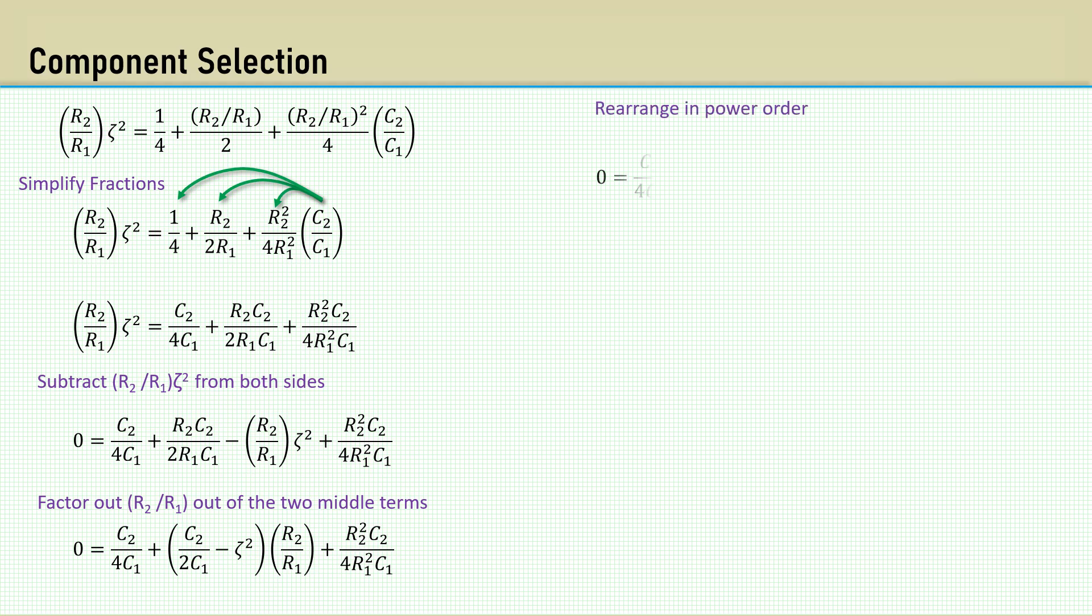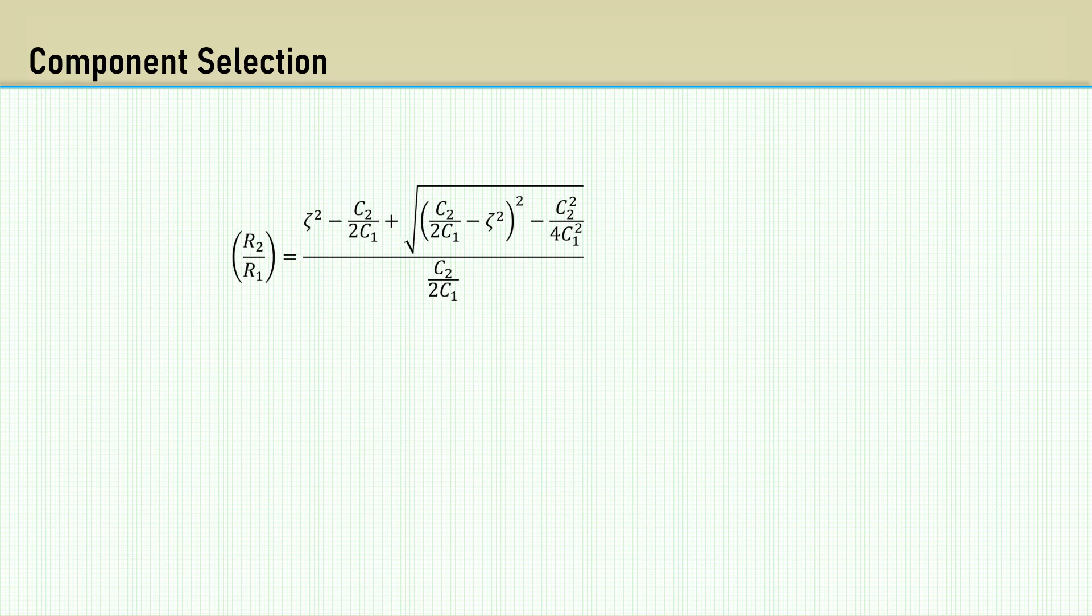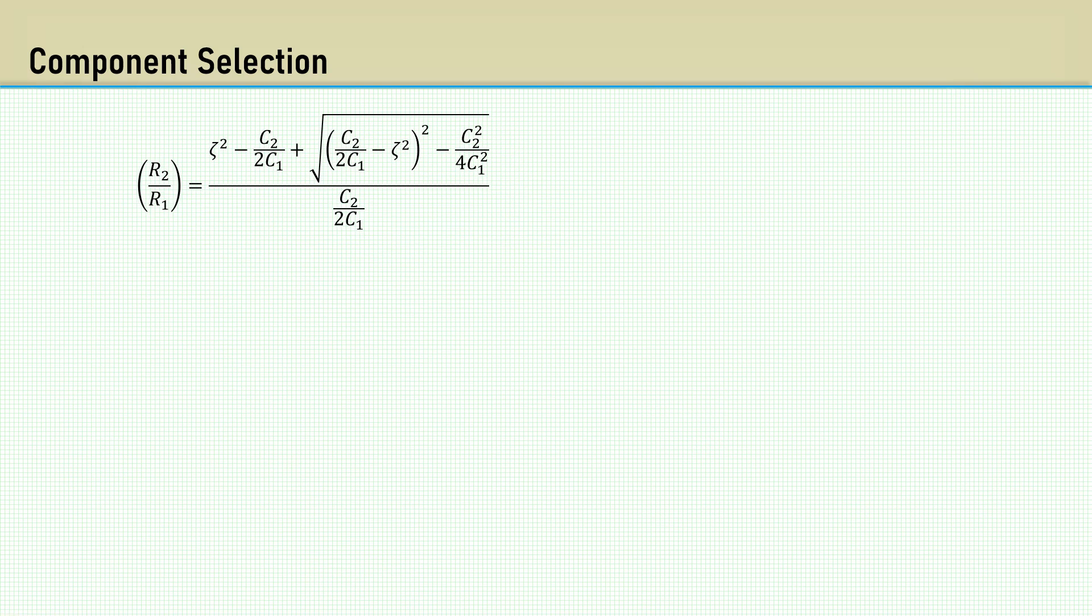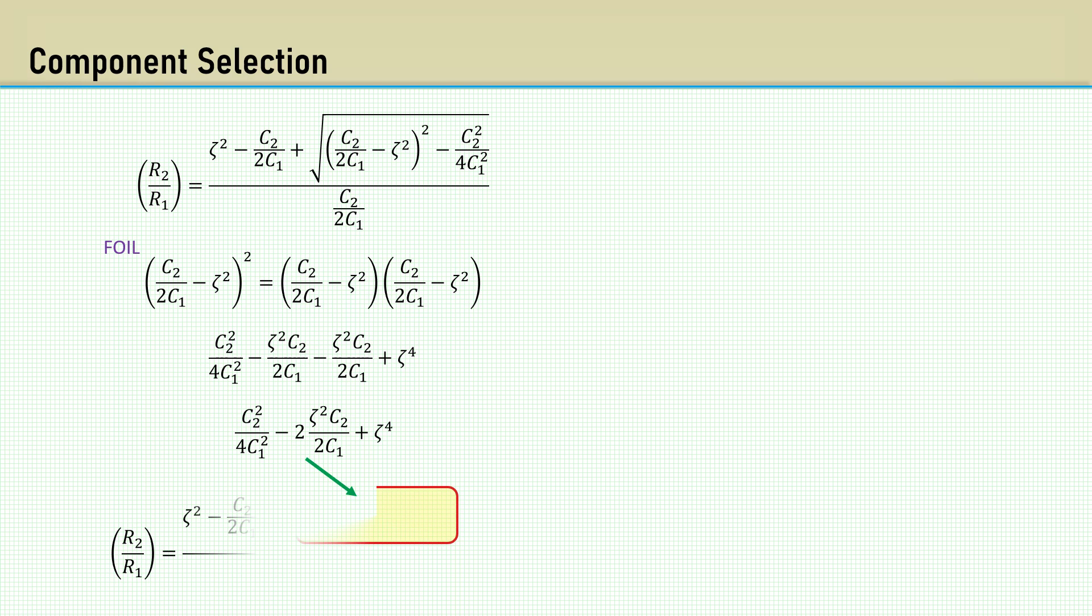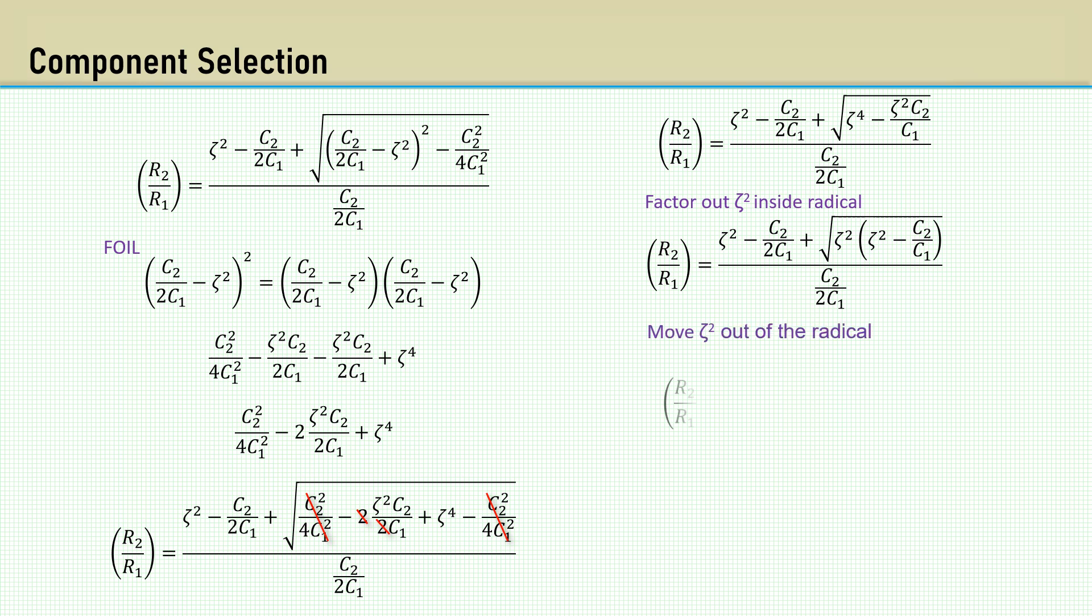That's a quadratic equation, so I'm rearranging it in power order. Here's our coefficients that we will insert into the quadratic equation and reduce the fraction. There's lots of simplification to do. Multiply this term by itself to square it using FOIL. Then place the result back in the radical. These like terms cancel and reduces to this.